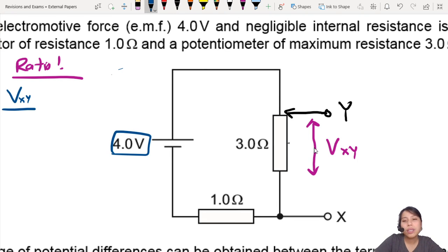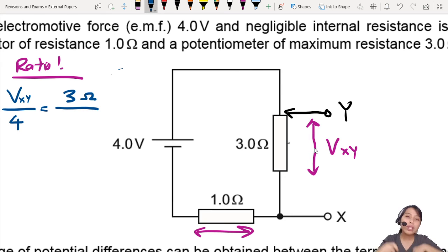Because 4 volts will be the drop of this one as well as VXY added together. So I can say that VXY over 4 volts, which is the battery EMF, equals to, then now you ratio the resistance. So VXY is going to have a full resistance of 3 ohms. What is the total resistance of the whole circuit? 3 plus 1. So you do 3 plus 1 ohm.